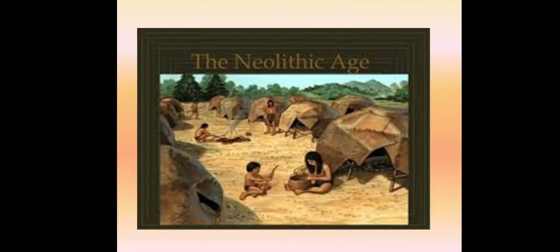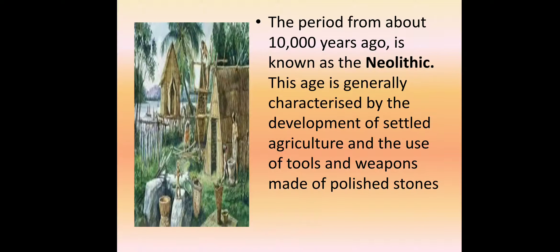The question arises: how did he get to know about farming? As historians suggest, it may have been by chance. Somebody must have seen a sapling growing somewhere — they would have eaten some fruit, seeds would have fallen down, and with the passage of time those seeds grew into a sapling. This is how they got to know about farming.